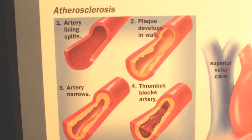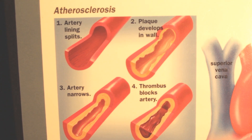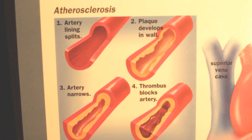Now let's take a look at this illustration showing atherosclerosis. Athero meaning fat, sclero meaning hardening, and osus meaning condition. So what we're dealing with here is a condition where fat hardens in the arteries, creating plaque. And again, what we are seeing is mucus buildup that has hardened within the arteries.